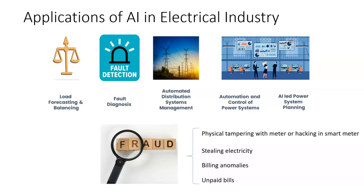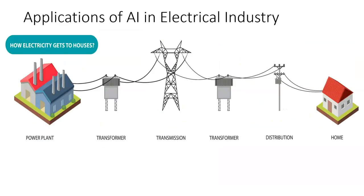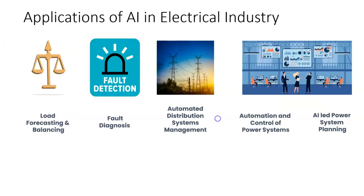Whether it is fraud or inefficiency, leakages happen in any one or more of these areas all the time. The point is to use AI to prevent leakages and predict leakages — that's a huge opportunity area for the electrical industry. The automation of control systems, automated management of distribution systems, and load forecasting are all areas where AI is applied to a limited extent in the electricity industry today.